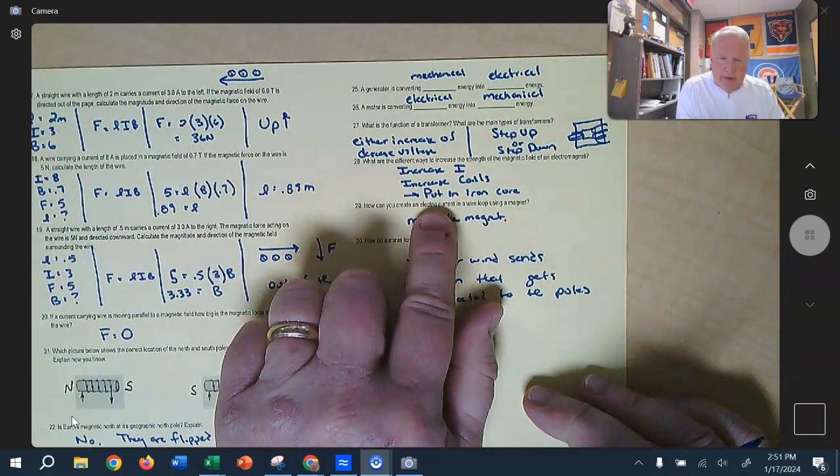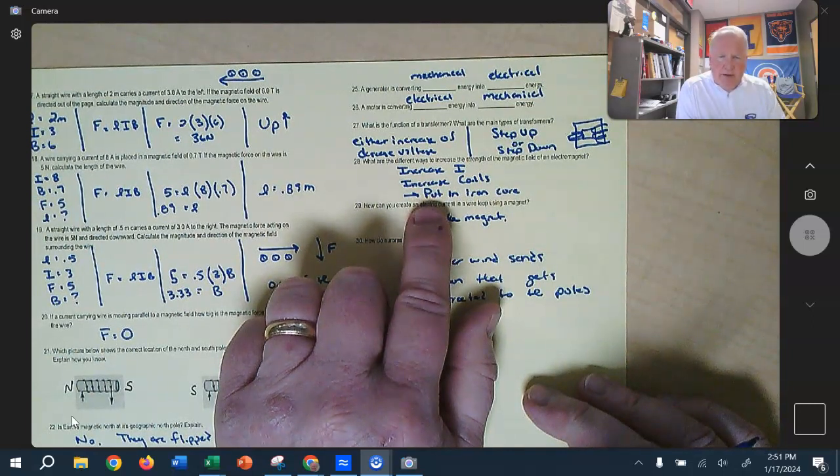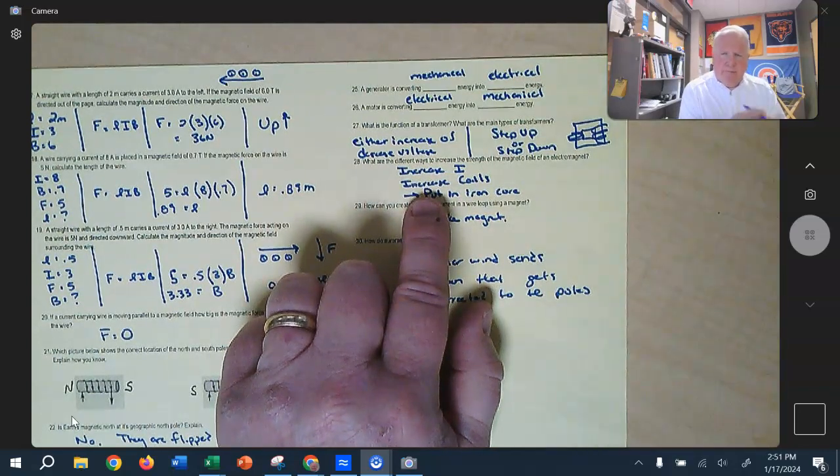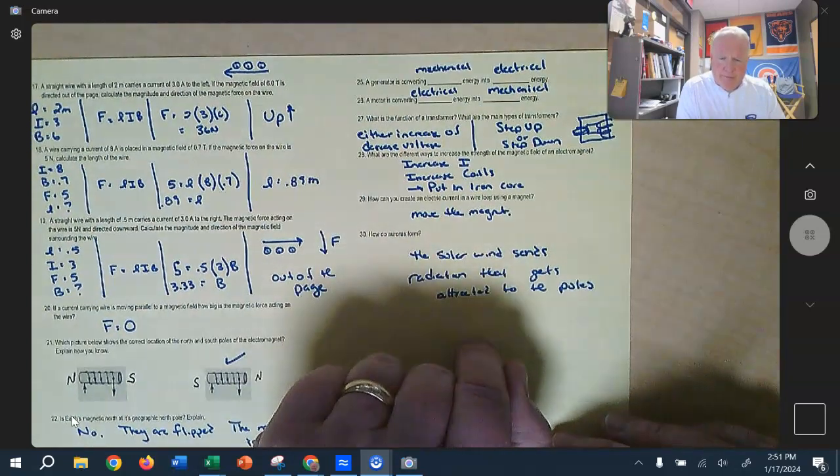These ones are the three ideas on how to make the magnetic solenoids more powerful. We either increase the current, increase the number of spins or coils, or we put an iron core to it.